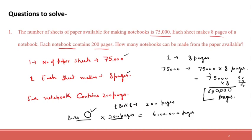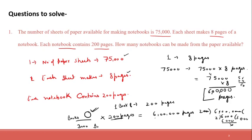To find the number of books, we will divide 6 lakh by 200. We can cancel the two zeros with the two zeros, leaving 6000 divided by 2. 2 into 3 is 6, so the answer is 3000. We can say that 3000 books can be made from 6 lakh pages.